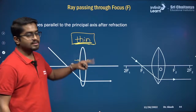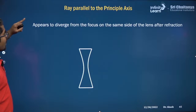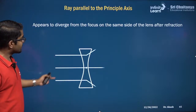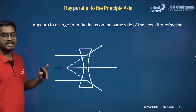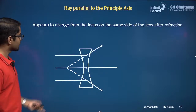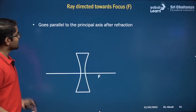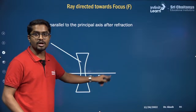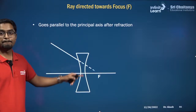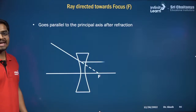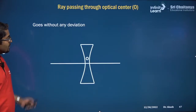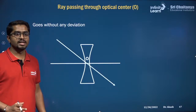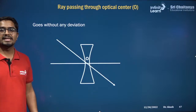For a concave lens, the three rays work as follows: incident rays parallel to the principal axis diverge after refraction and appear to come from the focus. A ray directed towards the focus becomes parallel to the principal axis after refraction. A ray passing through the optical center passes without any deviation. Remember these three rays for both convex and concave lenses.